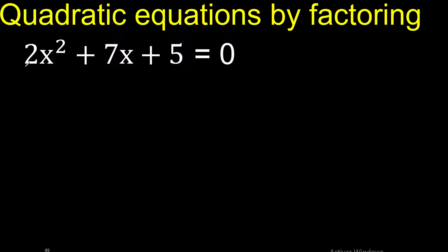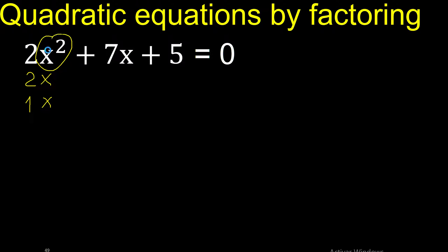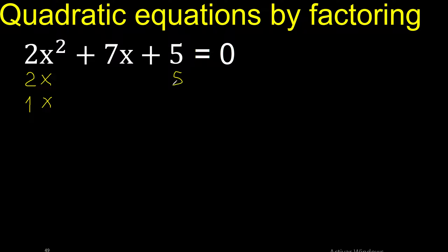2 numbers that multiply: 2 multiplied by 1 is 2, x multiplied by x is x squared. Then 2 multiplied by 5 is 5, and 1 multiplied by 5 is 5.